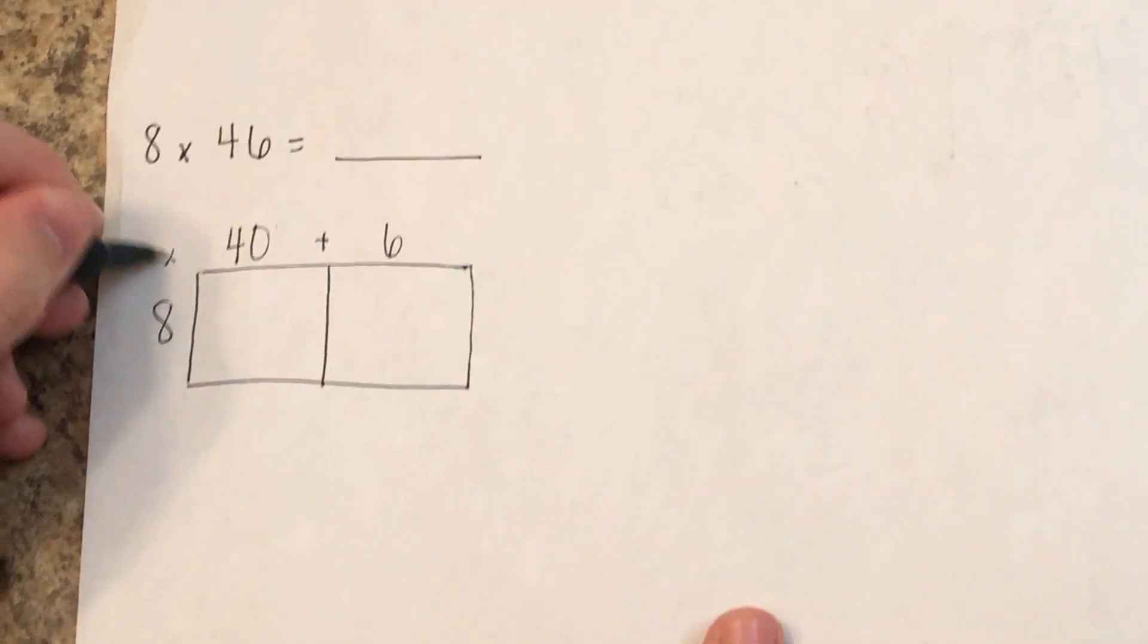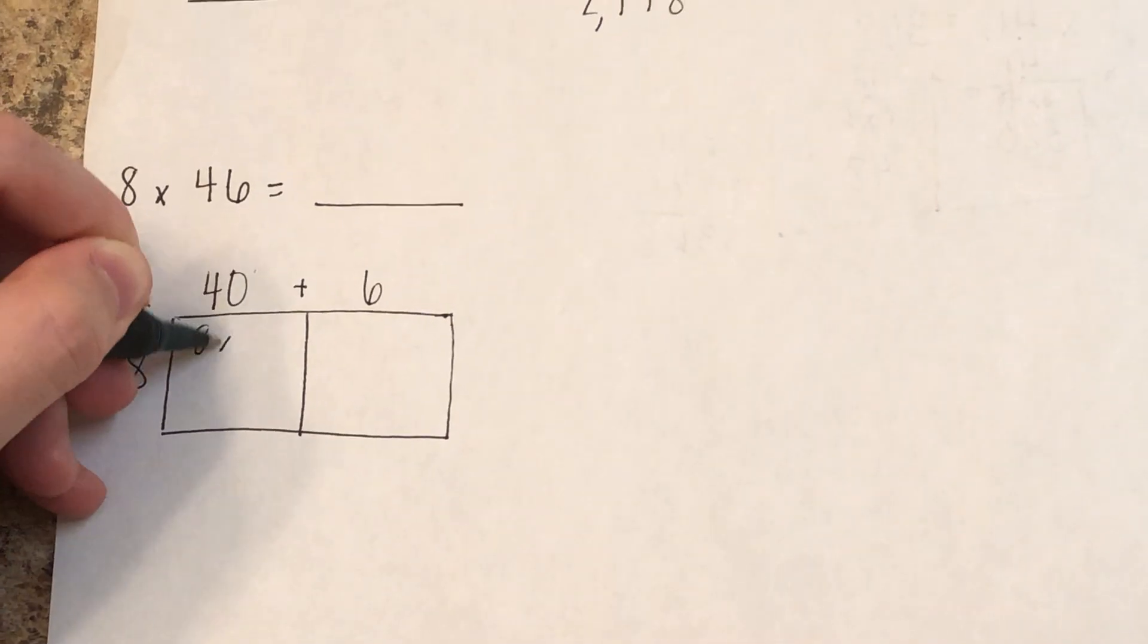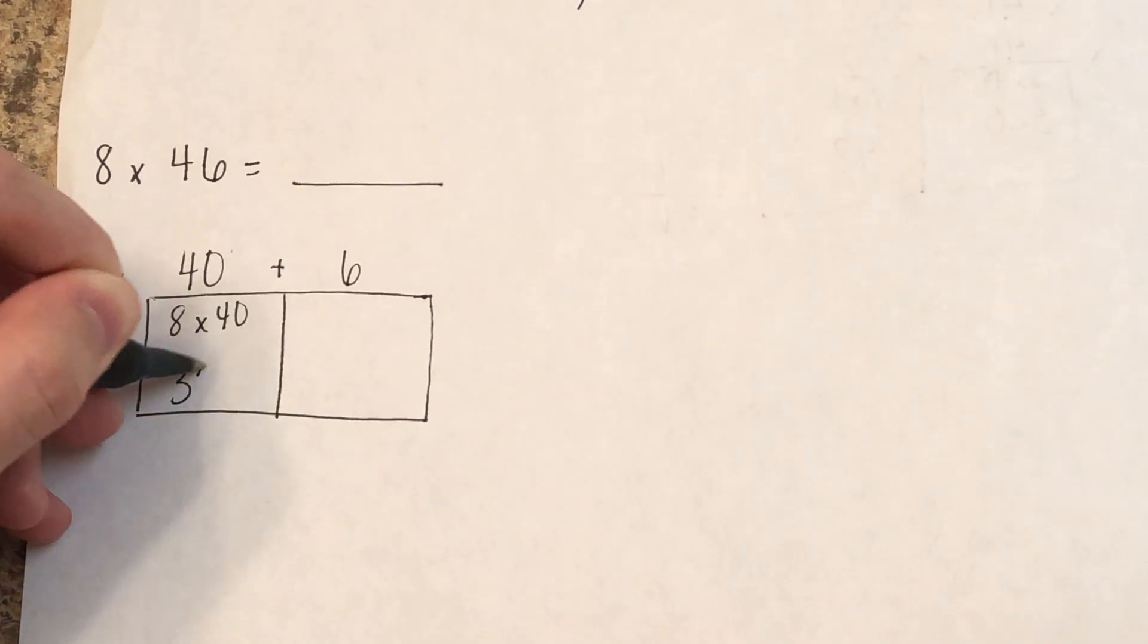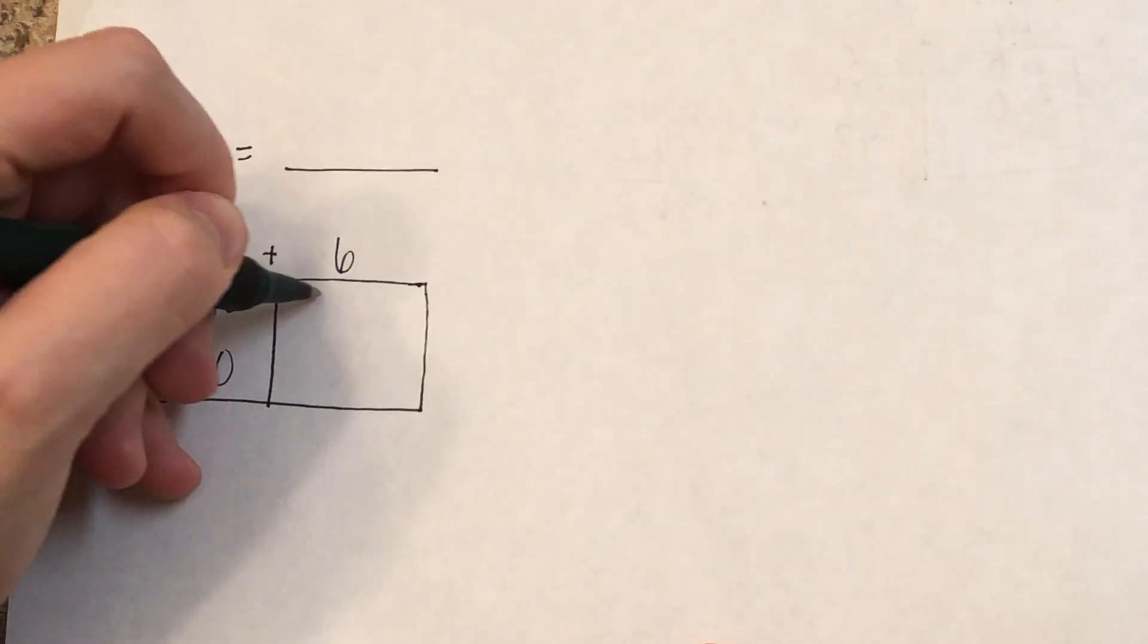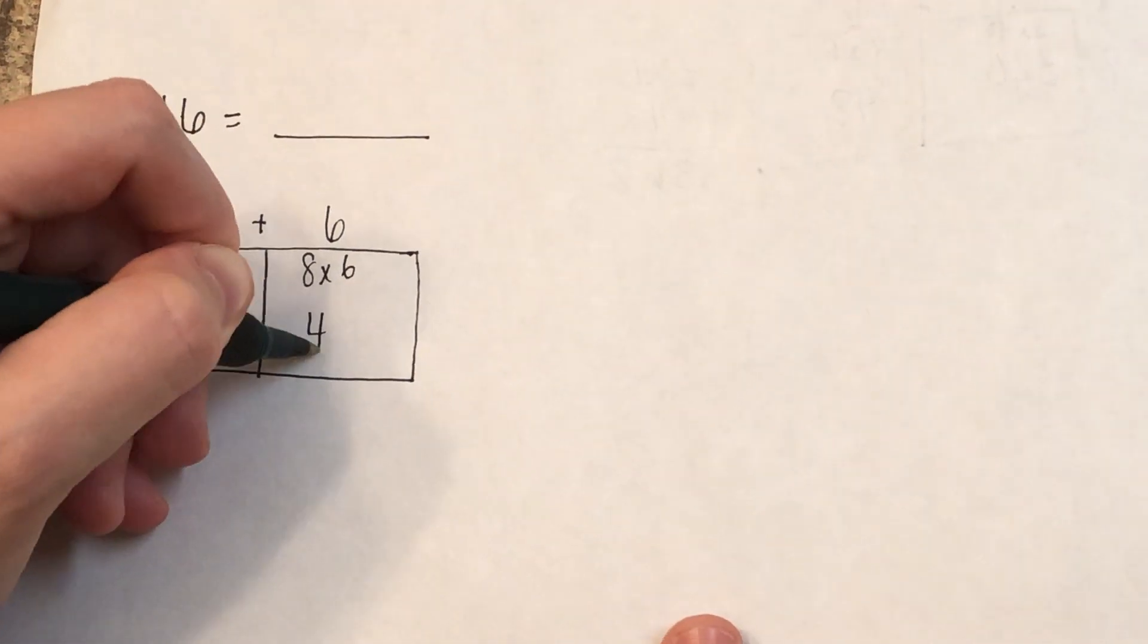You're going to multiply here. So 8 times 40, which is 320, and then 8 times 6, which is 48.